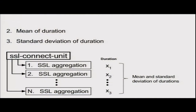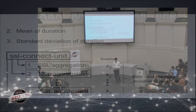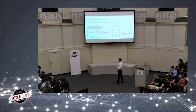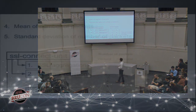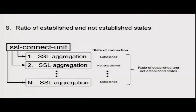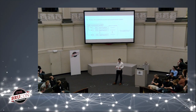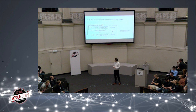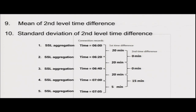Next is number of packets: mean and standard deviation of inbound and outbound packet counts. Similarly for bytes. Then the ratio of established to not-established connection states — each SSL aggregation records whether the connection was established, and we compute the ratio of established to not-established for each SSL connect unit.